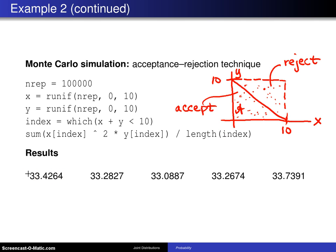you get 33.42, 33.28, 33.0, 33.26, 33.7. These are hovering around our theoretical value, 33.33. And because of that, we can conclude that the Monte Carlo supports the analytic solution.